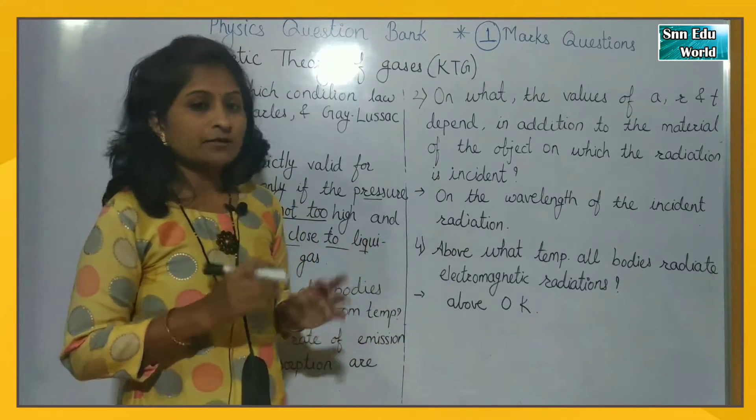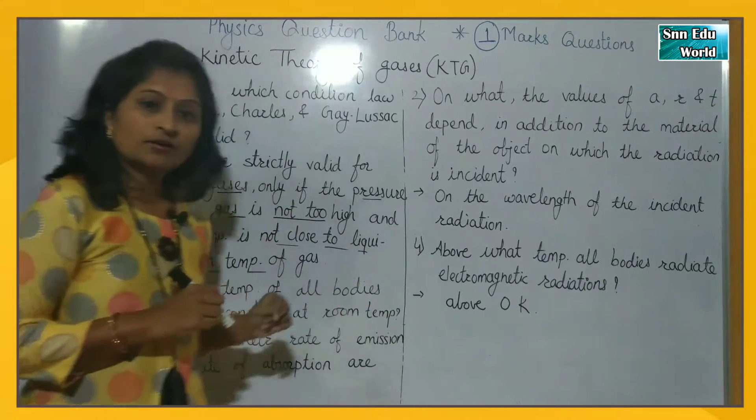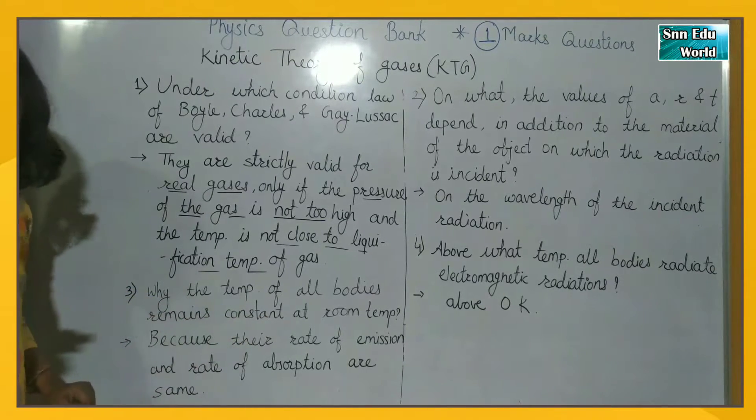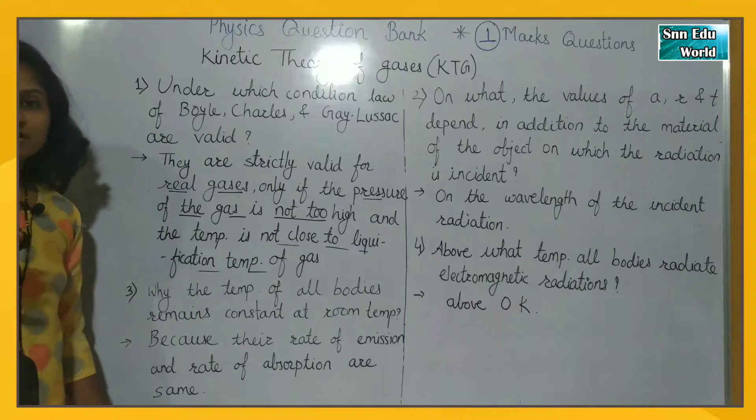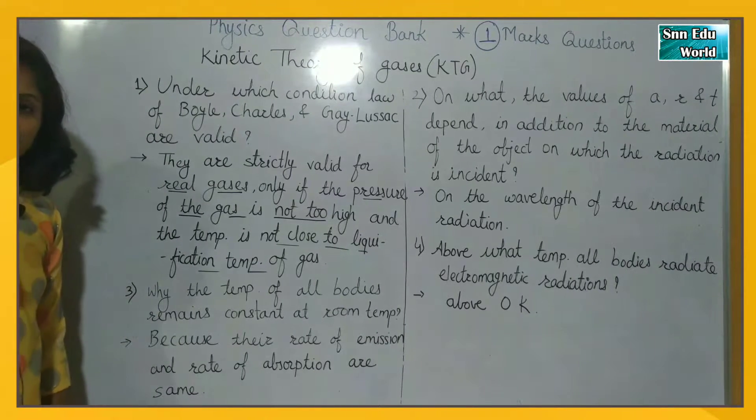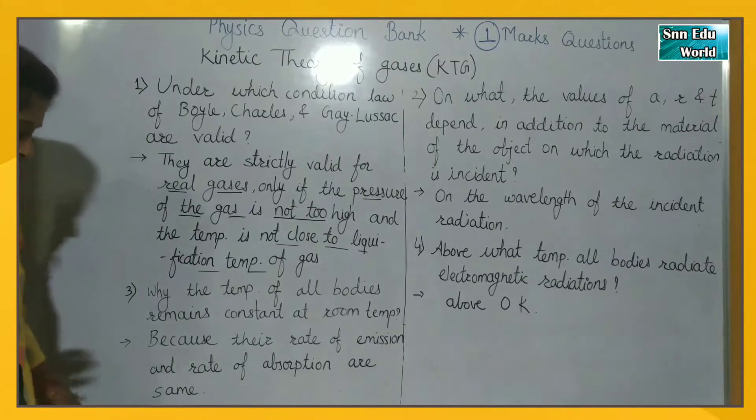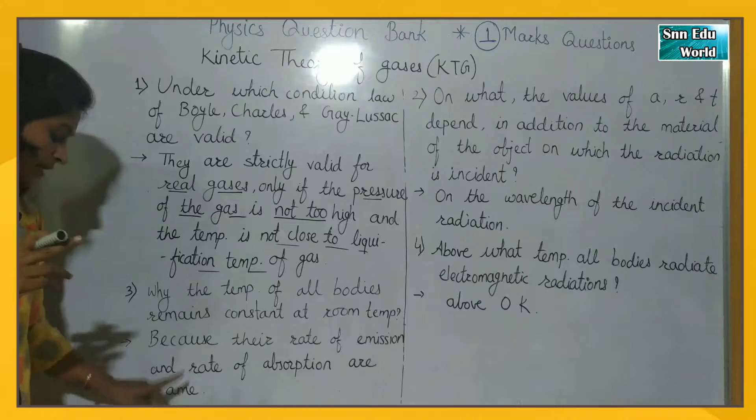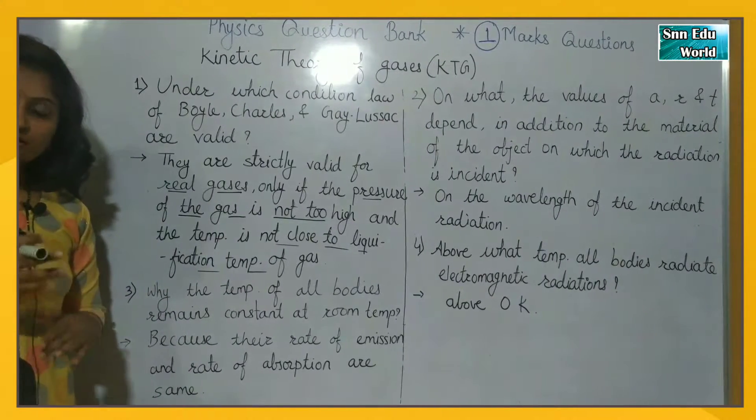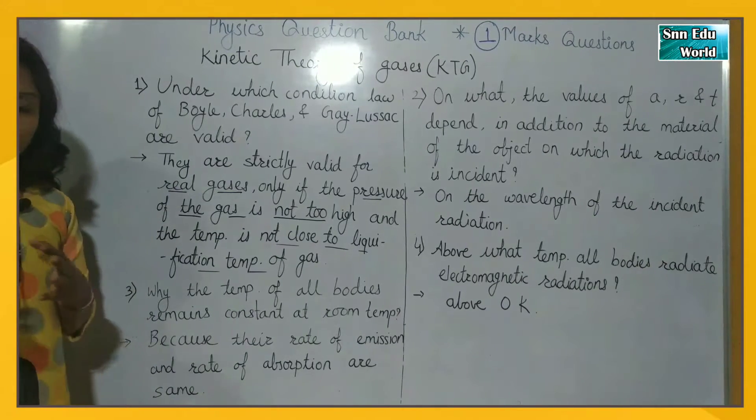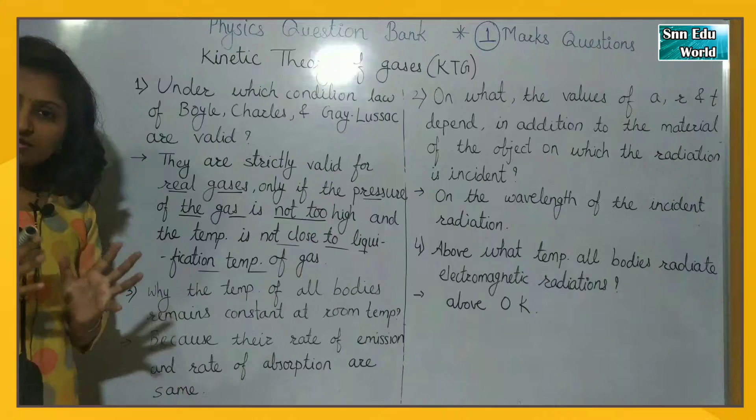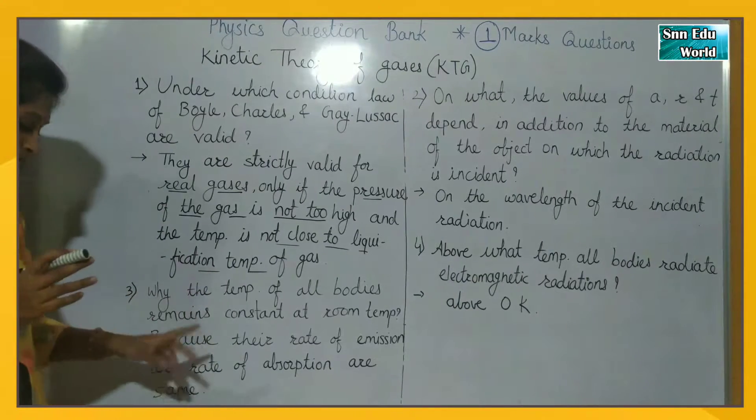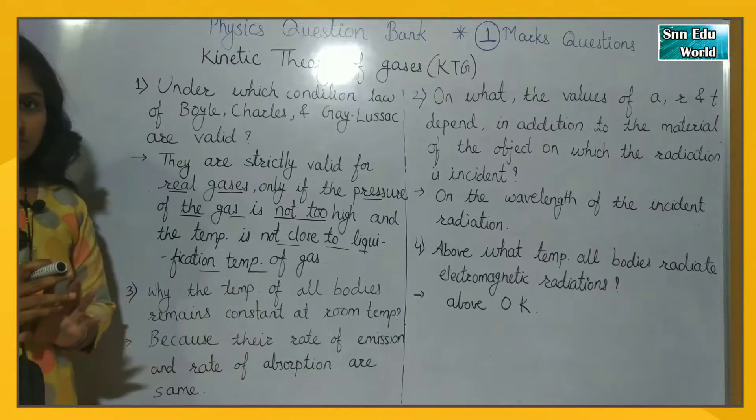Now the third question is why the temperature of all bodies remains constant at room temperature? At room temperature, if you observe, the answer is only because the rate of emission and the rate of absorption are the same. This is Kirchhoff's law that the rate of absorption equals the rate of emission. So at room temperature, how much heat is absorbed, that much is only emitted. That's why we will feel that all the bodies are having the same temperature.